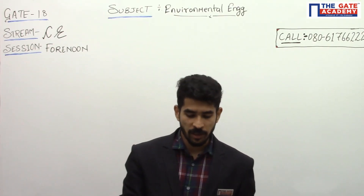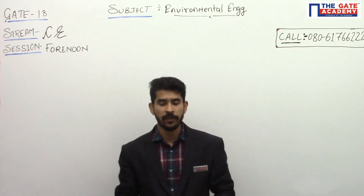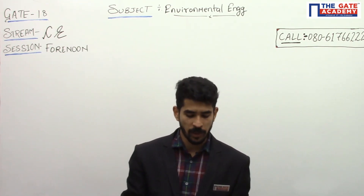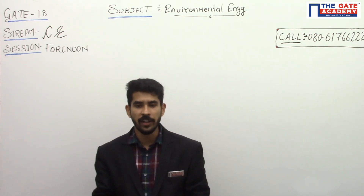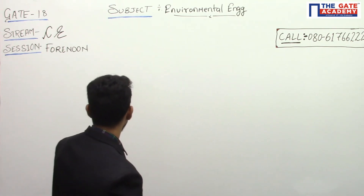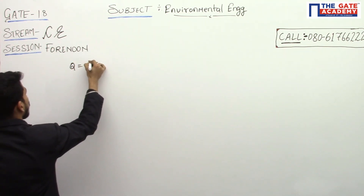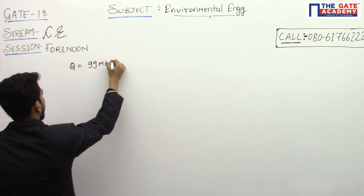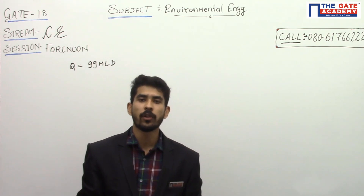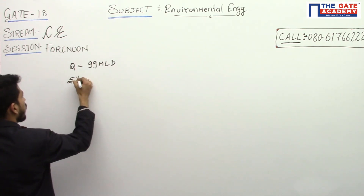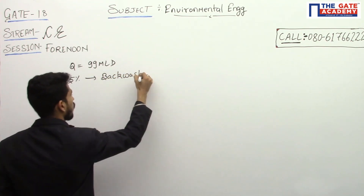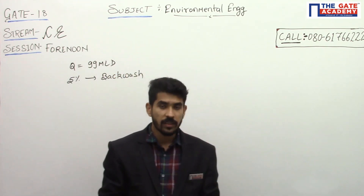Hello friends. Let us discuss a question asked in late 2018 for a civil paper in the forum session. This is a memory-based question. The question says a rapid sand filter treats 99 MLD of water, so the discharge Q is equal to 99 MLD. Then it says 5% of the water is required for backwashing.